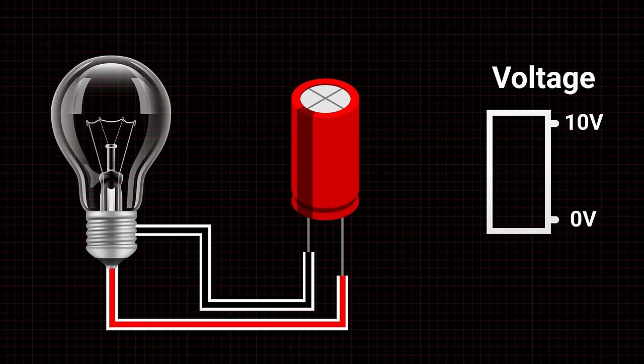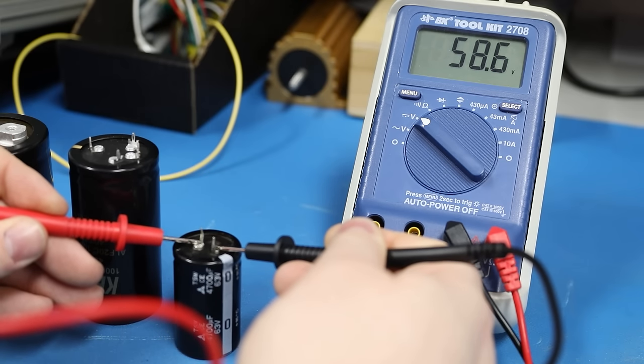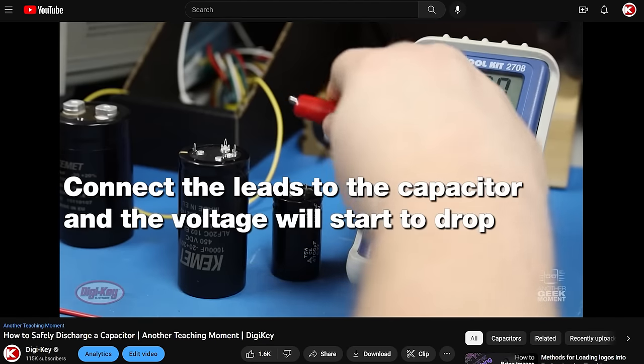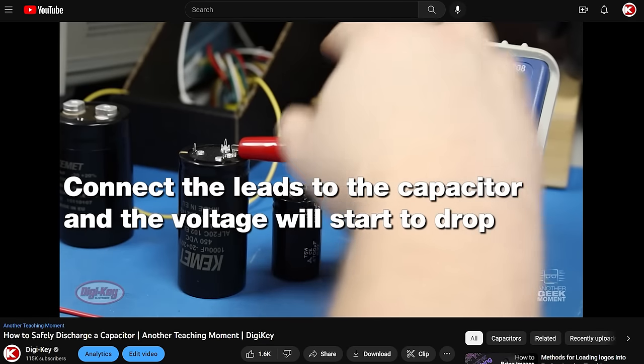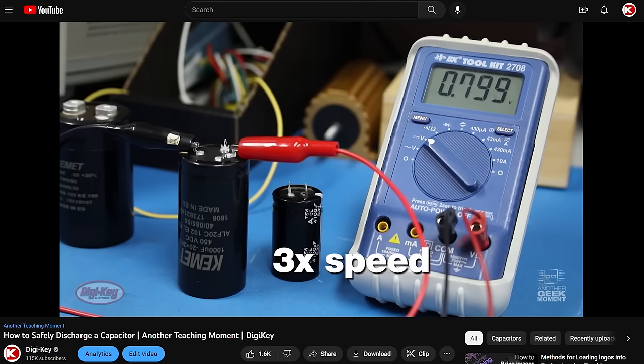The capacitor remains charged until the power source is removed and a load is applied, thus discharging it. Because of this, capacitors must be handled with extreme caution and always treated as if they are charged. For more information on how to safely discharge a capacitor, take a look at our video where we demonstrate how to accomplish this.